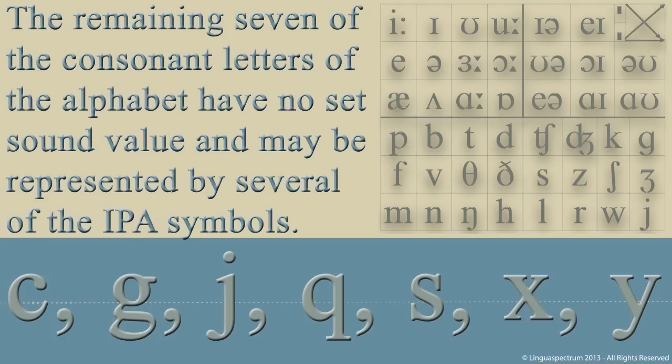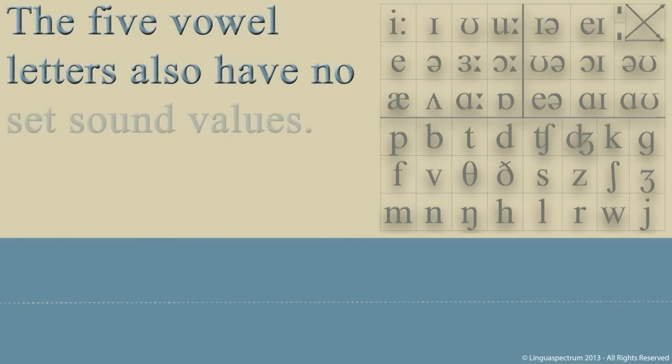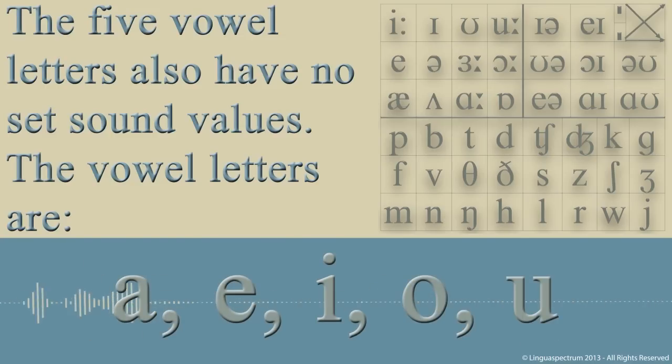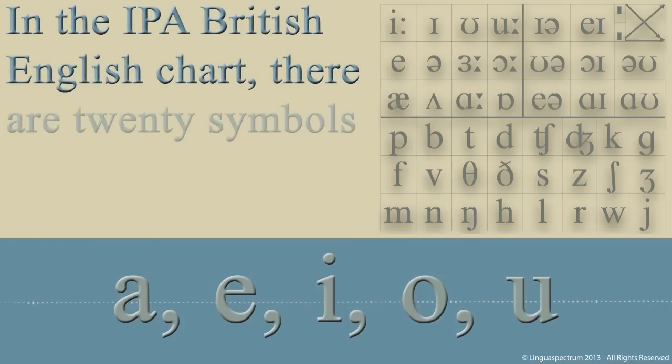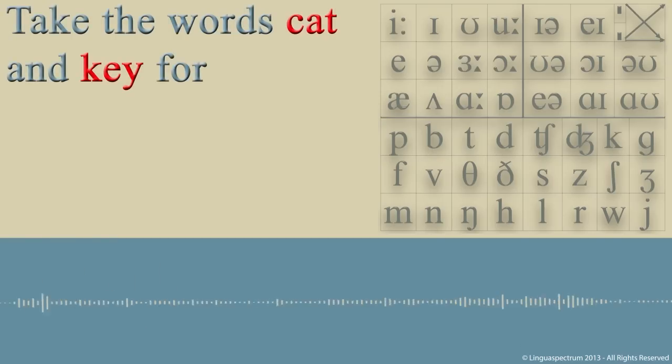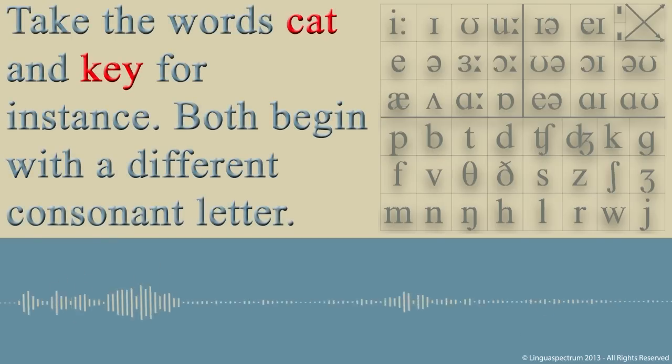The five vowel letters also have no set sound values. The vowel letters are A, E, I, O, U. In the IPA British English chart there are 20 symbols that represent the vowel sounds. Take the words cat and key for instance.